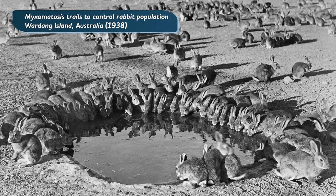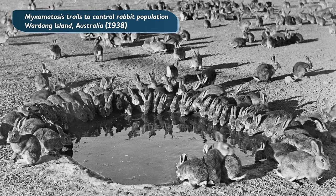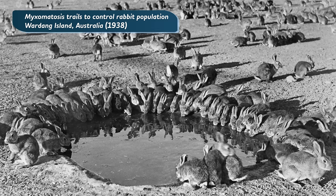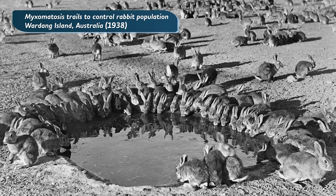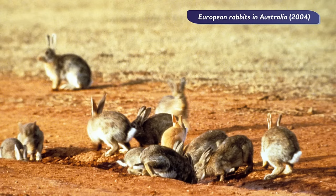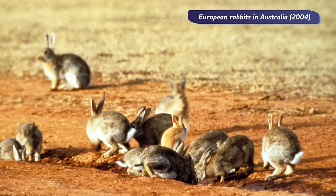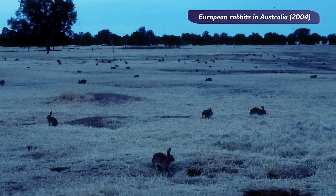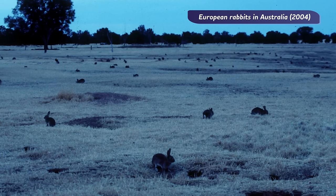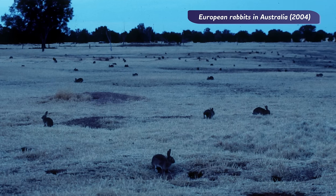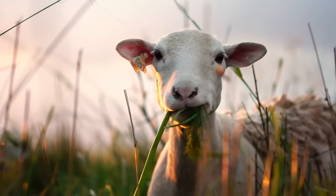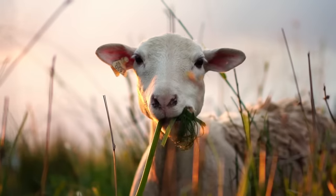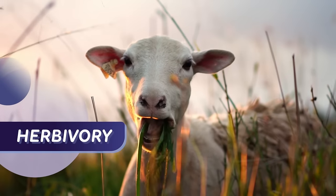Well, if I learned anything from 80's movies, it's that the scrappy underdog will always beat the rich preps. The rabbit outsmarted the hunters, and they did what rabbits do. And today, because they don't have a lot of natural predators to keep their population size in check, the European rabbit is an invasive species in Australia, contributing to the decline of native plants and animals. Predation is not just animals eating other animals—animals eat plants, too. We call that herbivory.